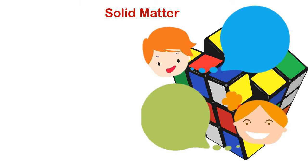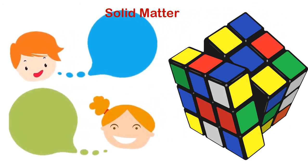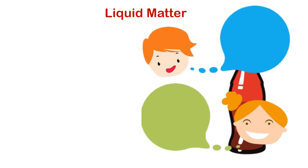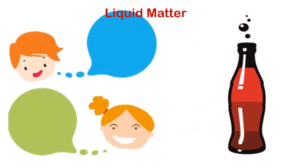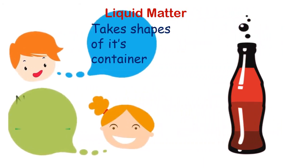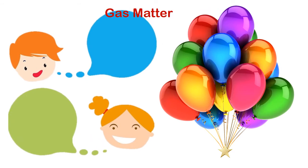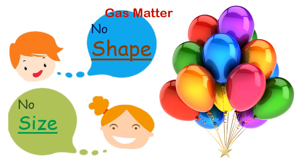Now, understand matter in an easy way. Every solid matter has its own shape and own size — it can't be changed. Second is liquid matter: liquid takes the shape of its container and has no own shape. Third is gas: it has no own shape and no own size. It behaves like the air around us.